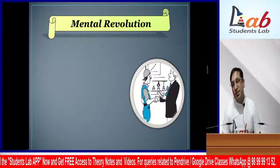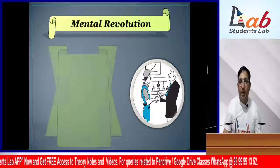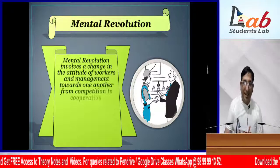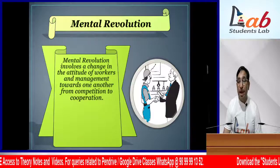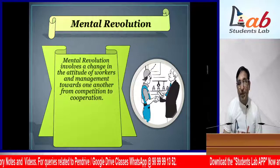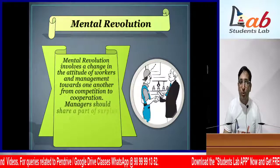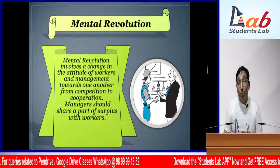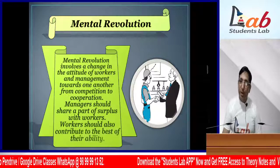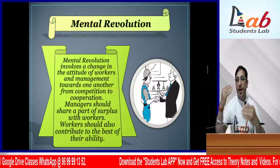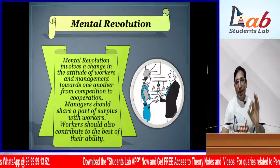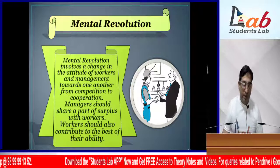The last technique given by Taylor is Mental Revolution. Mental Revolution means changing the mindset - changing the attitude of workers and management, so that both realize they need each other and replace competition with cooperation. Both should share the surplus with each other. This was a thought that Taylor gave: if we change our thinking, life will change, industries will change - and this has been proven absolutely correct to this day.